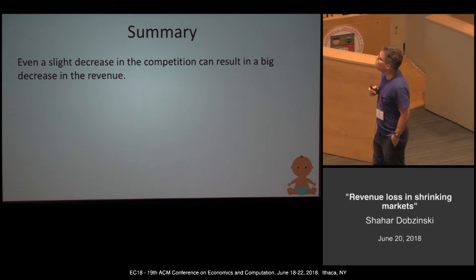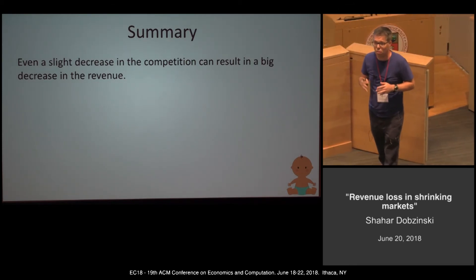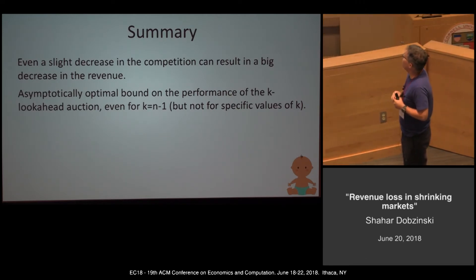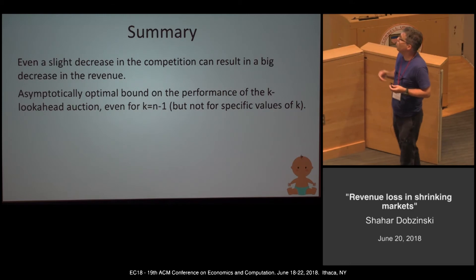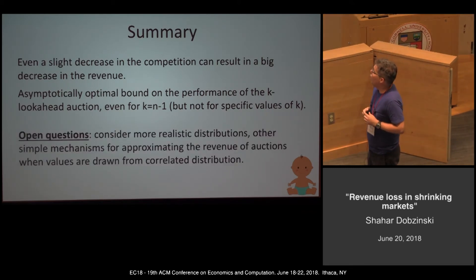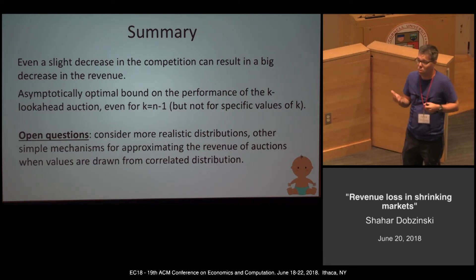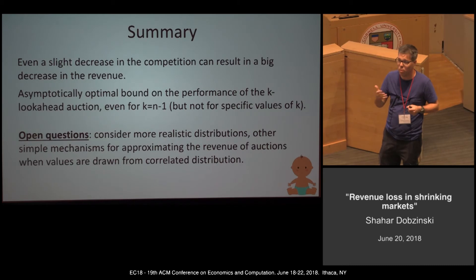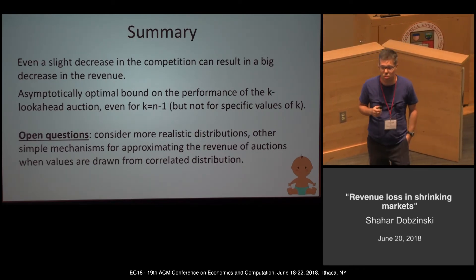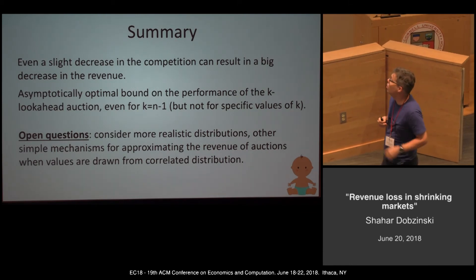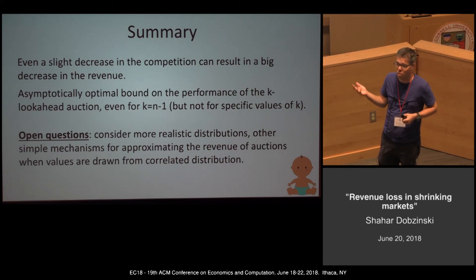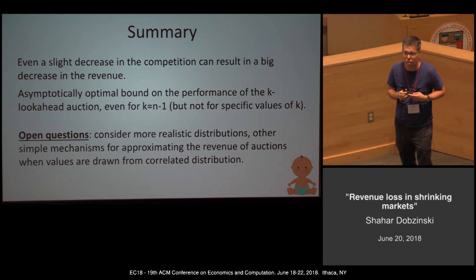To summarize: even a slight decrease in competition — even the weakest bidder leaving the market — can cause substantial revenue loss. This gives an asymptotically tight bound on the performance of the k-lookahead auction, even when k equals n-1. Open questions include considering more realistic distributions for the extra bidder, understanding what happens when other types of bidders leave, and finding alternative simple mechanisms that might perform better than the k-lookahead auction.